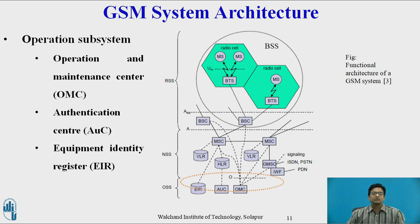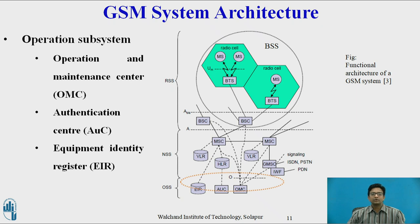OSS consists of traffic monitoring and status reports of network entities — BSS, BTS, BSC, HLR, and VLR. All status information of these network entities is present in OMC, along with subscriber and security management. It is also responsible for accounting and billing. OMC monitors and controls all other network entities via the O Interface.